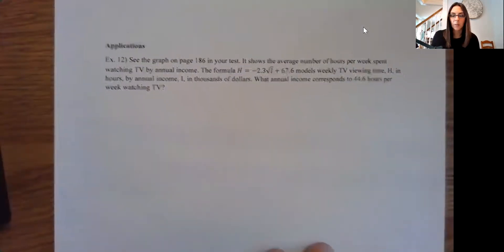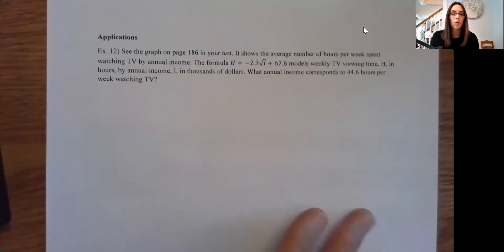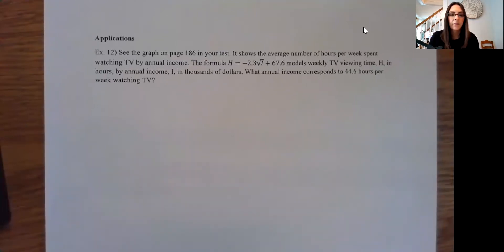So our last example is an application one. So we're going to use one of the strategies we just saw. So you can see your graph in your book on page 186 in your text. And it shows the average number of hours per week spent watching TV by annual income. We don't really need the graph though, but it is nice to see the visual. So I'll let you do that at home. But the formula is what we need here. So the formula is H equals negative 2.3 square root of I plus 67.6, which models the weekly TV viewing time. H is in hours and I is annual income. So what annual income corresponds to 44.6 hours per week of watching TV?